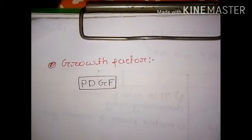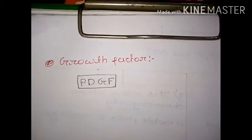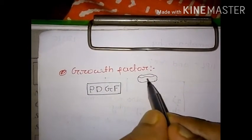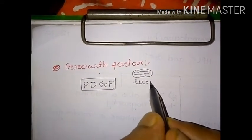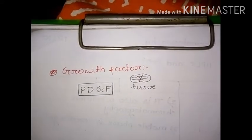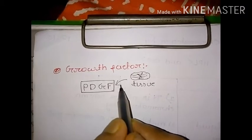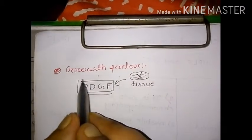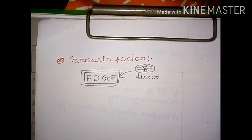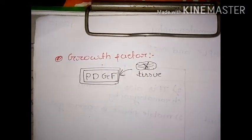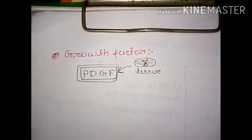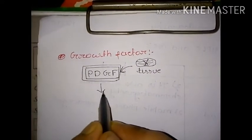PDGF is a factor found in the blood platelets in mammals. Suppose there is a tissue — when the tissue is damaged, it releases a factor that is known as PDGF, platelet derived growth factor. PDGF is generally found in blood platelets in mammals, and its role is to help in the growth and division of fibroblast cells.